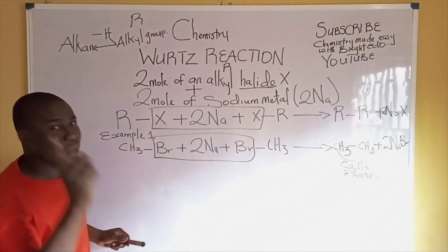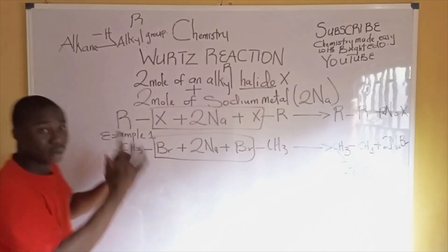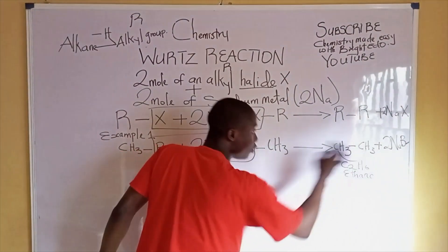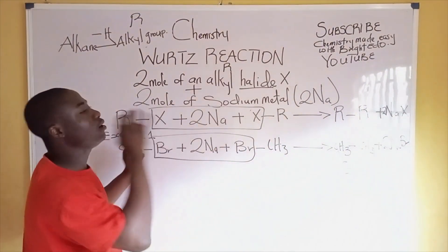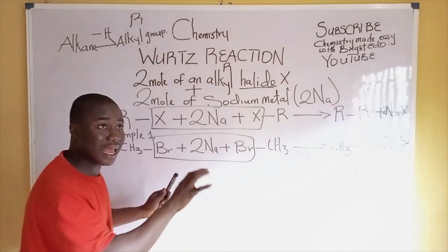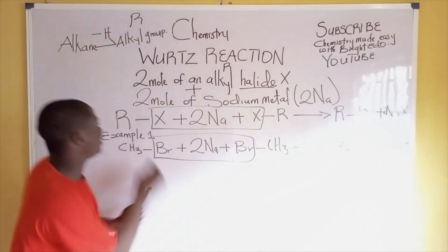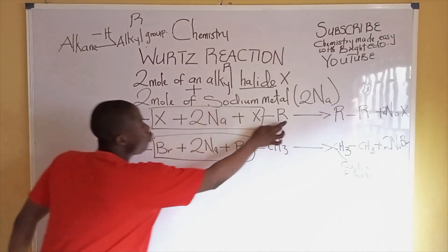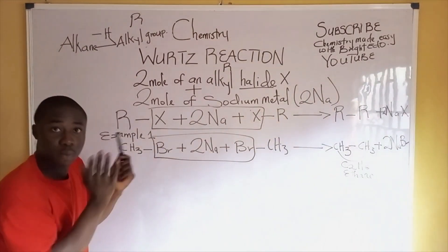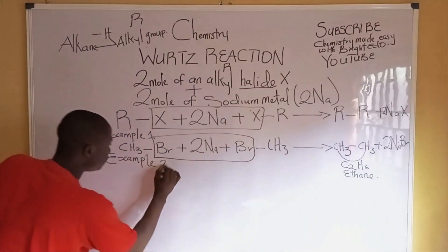So for the Wurtz reaction, two moles of an alkyl halide react with two moles of sodium metal to form an alkane. The alkyl halide can be in two forms. The first is the symmetric form, where the two alkyl groups are the same, as seen in this example.